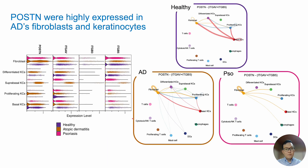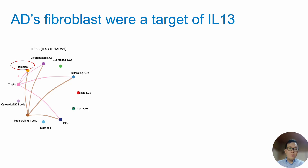Moreover, using cell-cell communication analysis, we identified that the highest communication between fibroblasts and keratinocytes was in AD, but not in healthy or psoriasis. Moreover, we noticed that fibroblasts in AD were targeted by IL-13 from T cells and proliferating T cells.